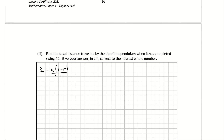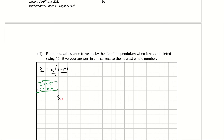Writing down the known information: A, the first term, is 45 centimeters, and R, the ratio, is 0.9. For swing 40, N is 40. Substituting: S40 equals 45 times (1 minus 0.9 to the power of 40), all over 1 minus 0.9. That gives 443.349. The question wants it to the nearest whole number, so the answer is 443 centimeters.